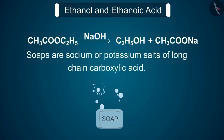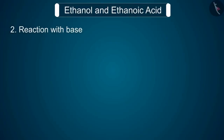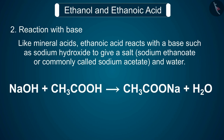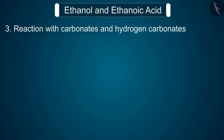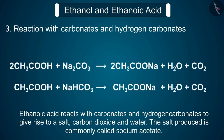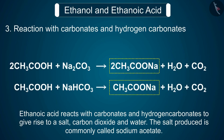This reverse reaction is known as saponification because it is used in the preparation of soap. Soaps are sodium or potassium salts of long-chain carboxylic acids. Reaction 2: Reaction with base. Ethanoic acid reacts with a base such as sodium hydroxide to give sodium ethanoate (commonly called sodium acetate) and water. Reaction 3: Reaction with carbonates and hydrogen carbonates. Ethanoic acid reacts with carbonates and hydrogen carbonates to give a salt, carbon dioxide, and water. The salt produced is commonly called sodium acetate.